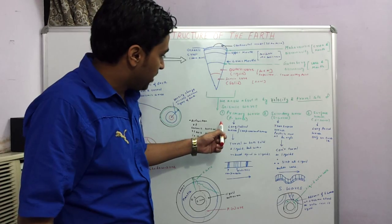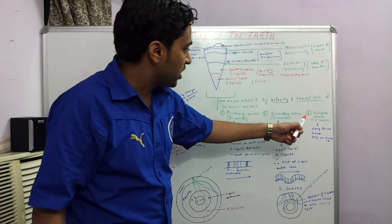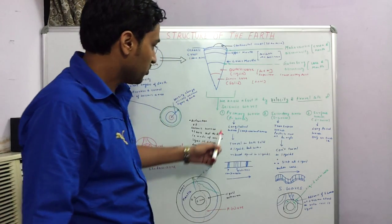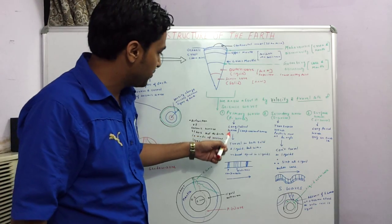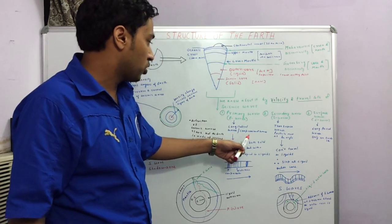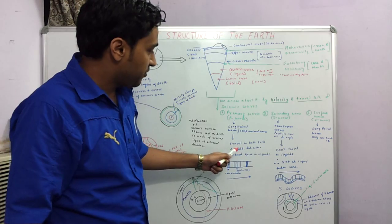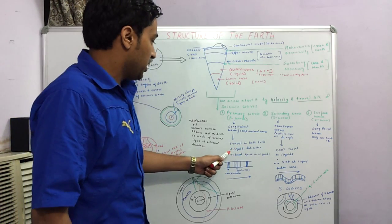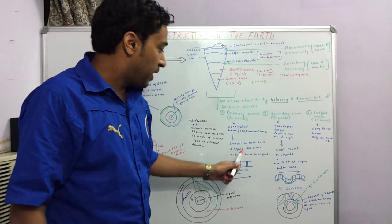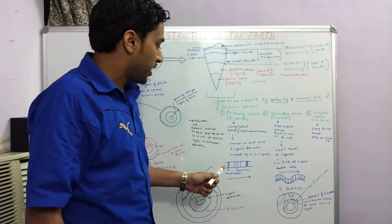These waves can be primary waves, secondary waves, and surface waves. The primary waves or the P waves are longitudinal waves or compressional waves. These waves can travel both in solid as well as liquids, but their speed is lesser in liquids and higher in solids.